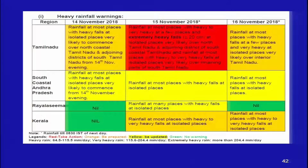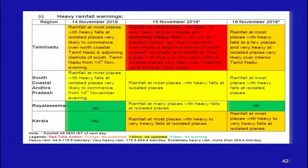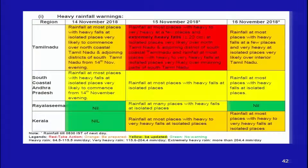The warning for 15th November, highlighted in a red box, states heavy to very heavy rainfall at most places in Tamil Nadu with extremely heavy fall — greater than 20 centimeters — at isolated places. This type of information is very useful to local people on land, as well as fishermen who move out for their daily activities.